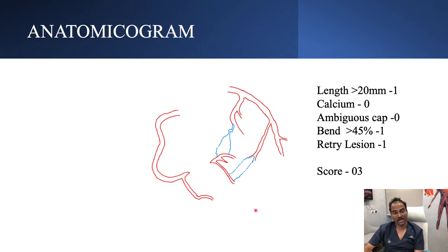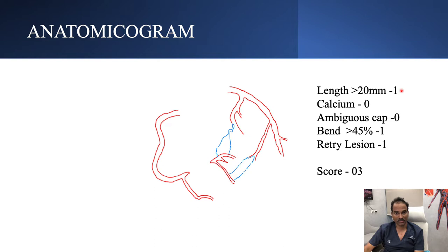This is an anatomogram of the patient. There is a long CTO, and there is an LEPDA, and it looks there is an ambiguous course, and there is a septal collateral and an epicardial collateral. Both collaterals were not good interventional collaterals for this patient. Coming to JCTO score: long length, there is a loop within the CTO, and also it's a reattempt. Overall score is 3.